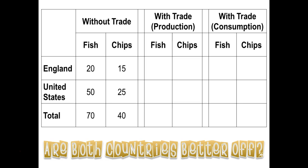However, with trade, if England focuses only on what it has a comparative advantage in — producing only fish and no chips — and relies on the United States to produce all chips for both countries, then total consumption becomes 80 fish and 50 chips. For example, England could consume 25 fish and 20 chips, and the U.S. could consume 55 fish and 30 chips. Both countries have increased the amount of each good they can consume — England gets five more fish and five more chips, and so does the United States — which is why countries engage in international trade.